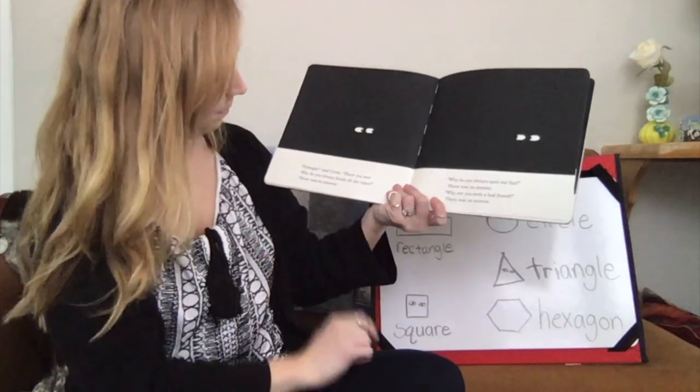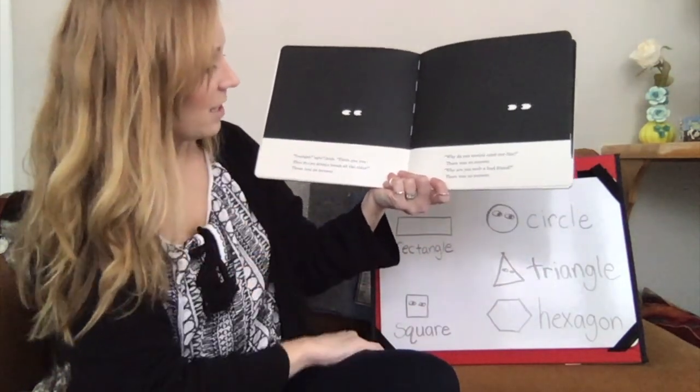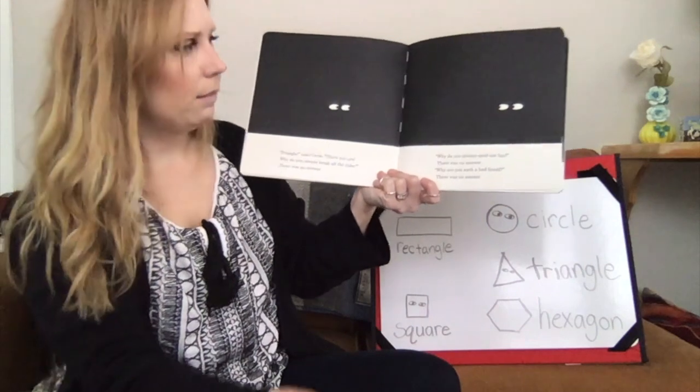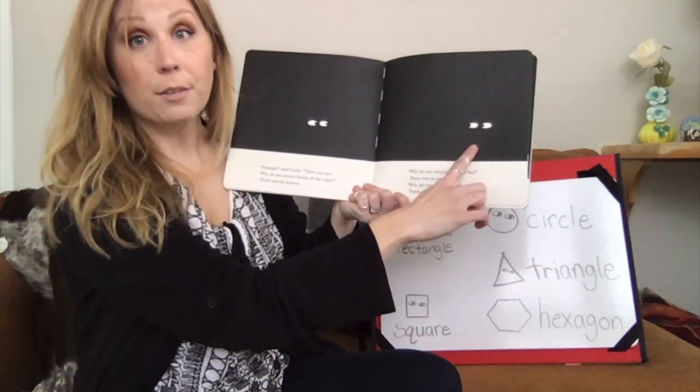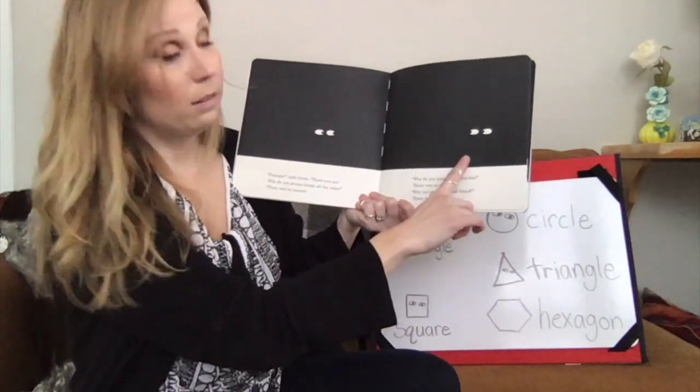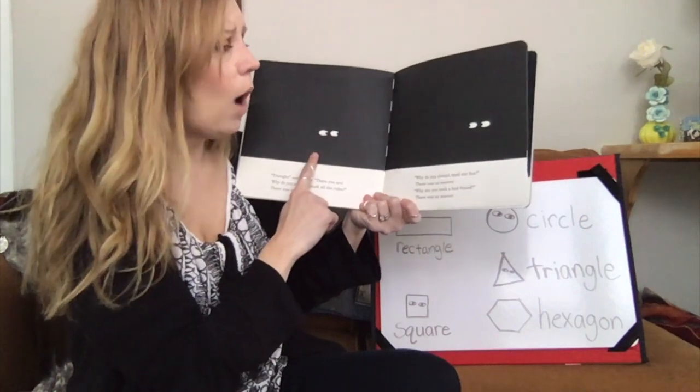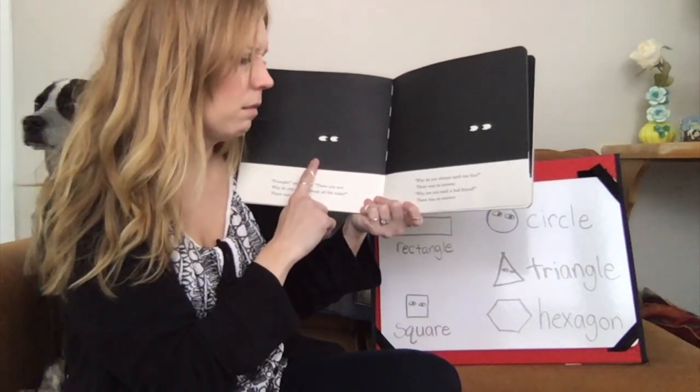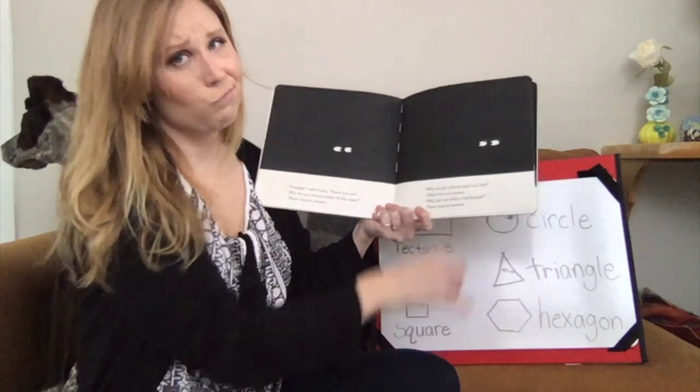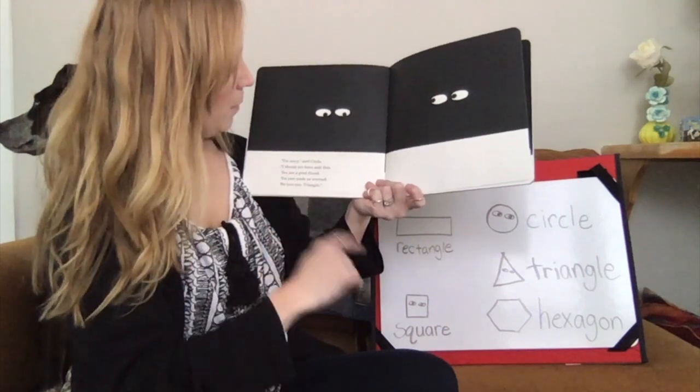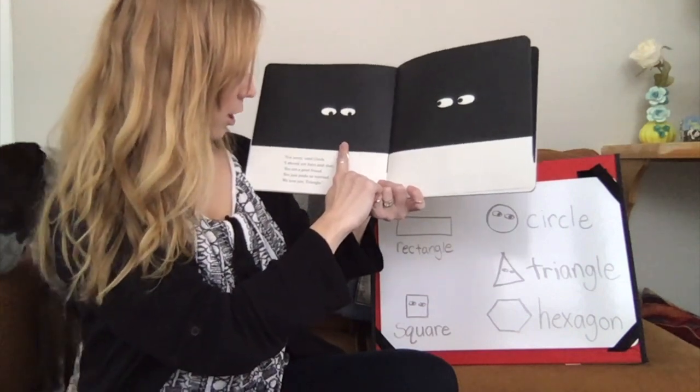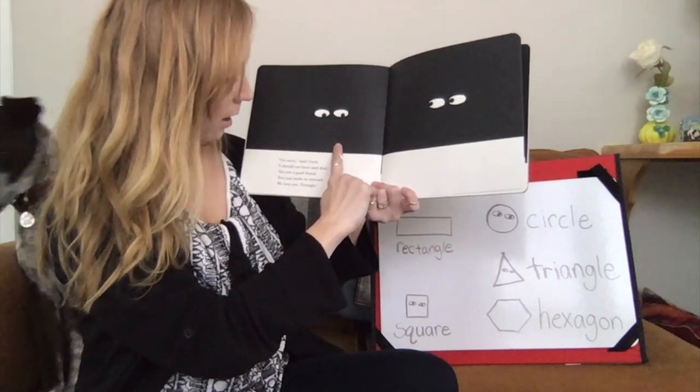Here's Circle. Triangle, Triangle, said Circle. There you are. Why do you always break all the rules? There was no answer. Why do you always spoil our fun? There was no answer. Why are you such a bad friend? I'm sorry, said Circle. I should not have said that. You are a good friend. You just made us worried. We love you, Triangle.